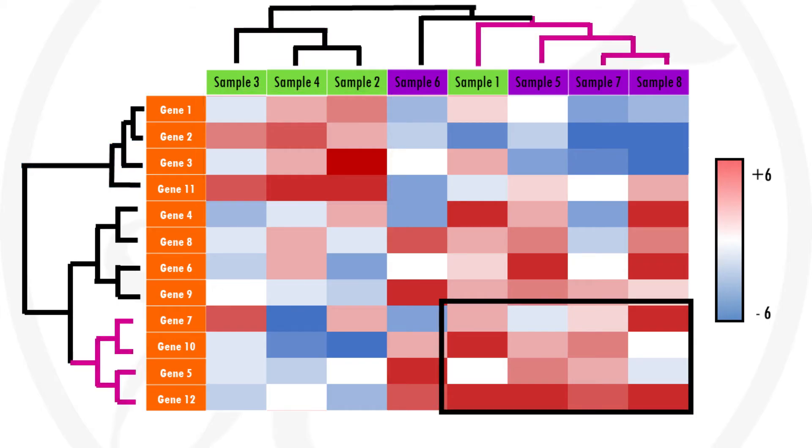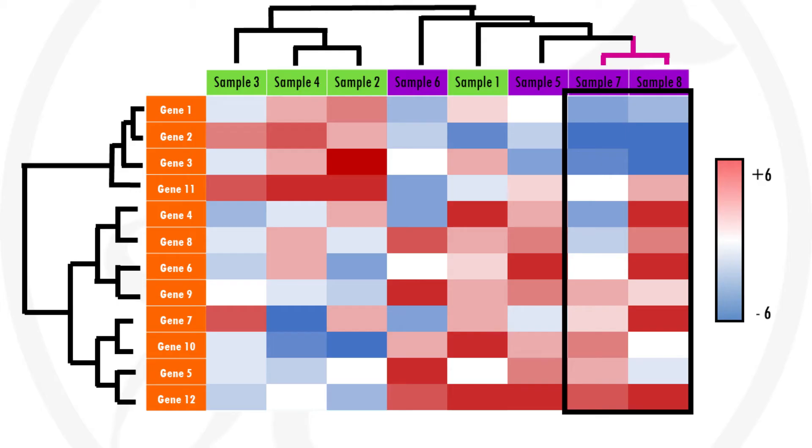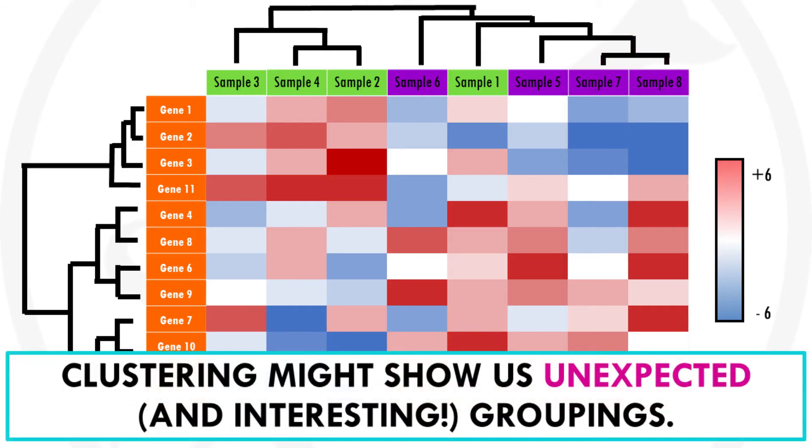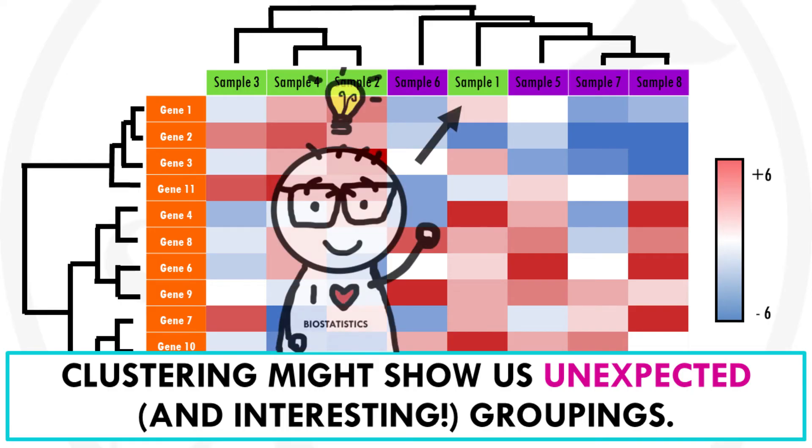So we can find many more patterns in our heatmap. They can involve smaller gene sets or just a few samples. It really depends on our data and what we want to visualize with it. In our example, we expect cancer samples to cluster together and healthy samples to cluster together. But clustering might show us unexpected and interesting groupings.